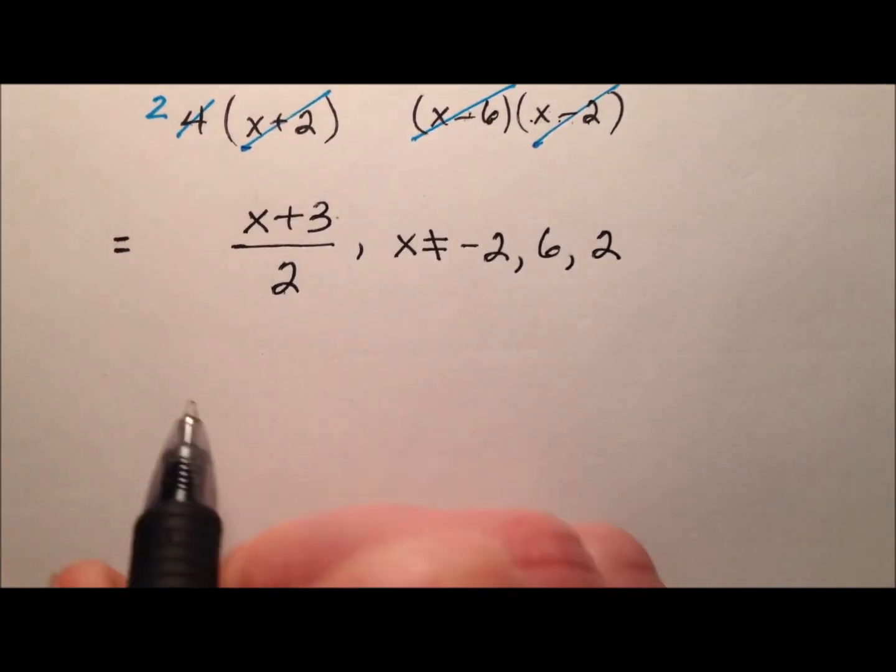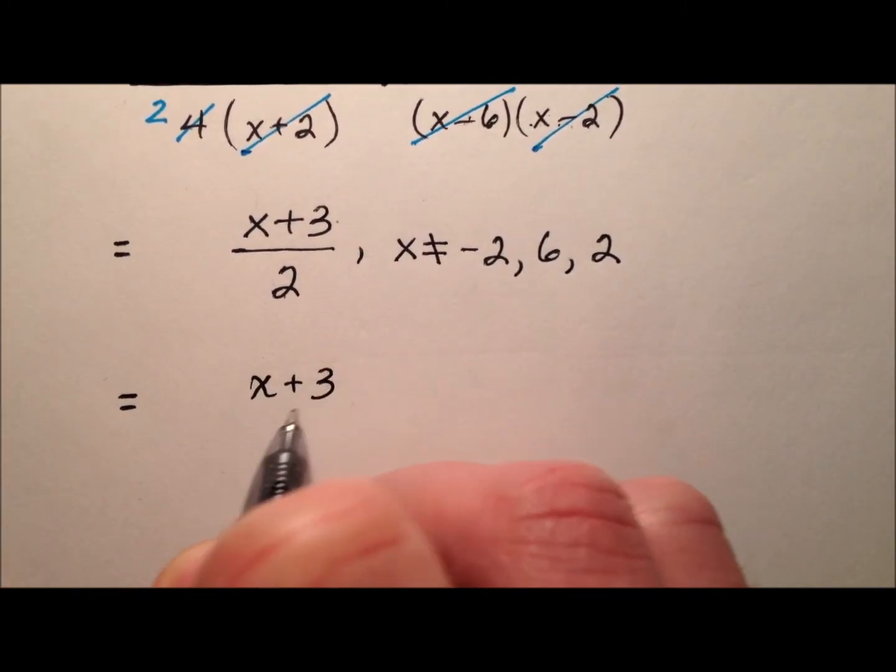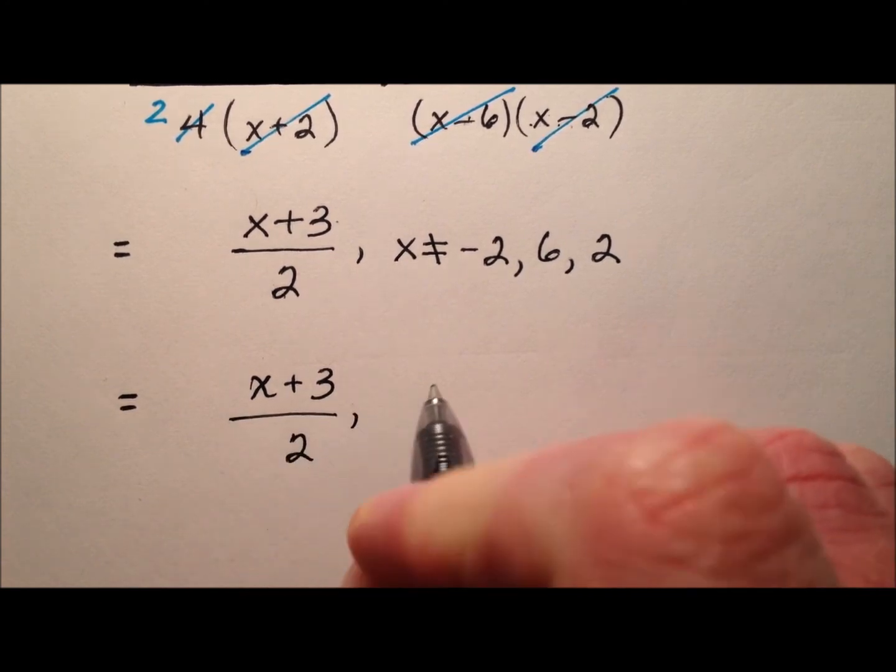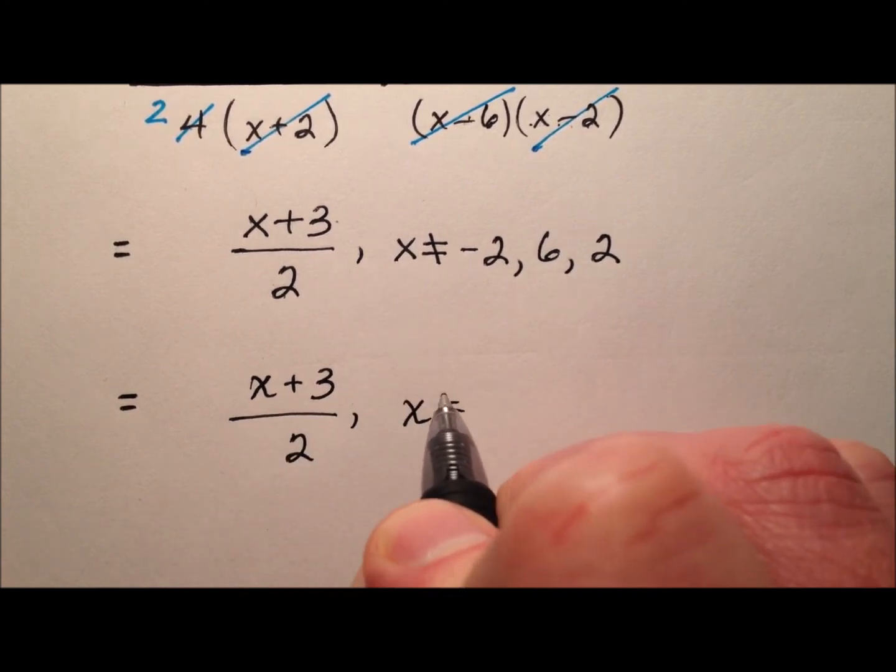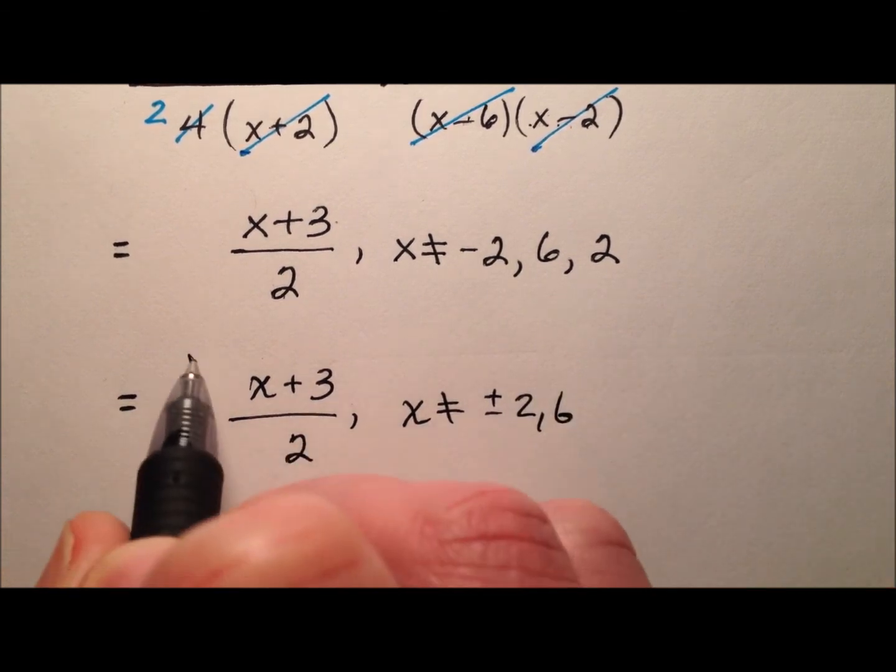Another way I could write this if I wanted to kind of tidy it up a little bit: (x + 3)/2, but my x cannot be ±2 or 6.